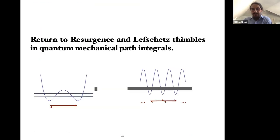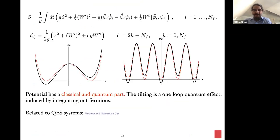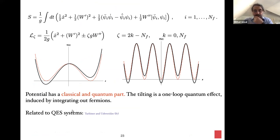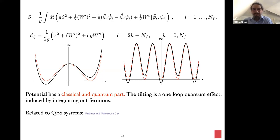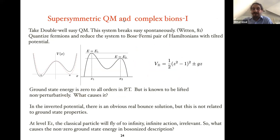Let me go back to quantum mechanics and path integrals, discussing N=1 supersymmetric quantum mechanics as well as the quasi-exactly-solvable (QES) systems. For the double-well potential with N=1 SUSY: the superpotential is cubic, there is no normalizable ground state wave function, and supersymmetry is spontaneously broken. We know ground state energy is zero to all orders in perturbation theory, but it is lifted non-perturbatively.